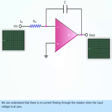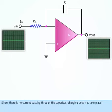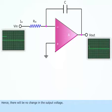There is no current flowing through the resistor when the input voltage is at zero. Since there is no current passing through the capacitor, charging does not take place. Hence, there will be no change in the output voltage.